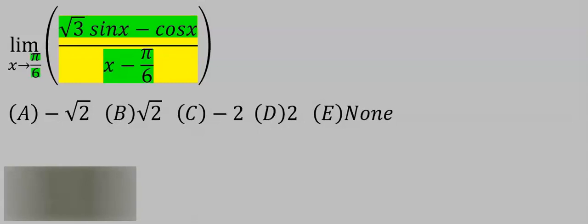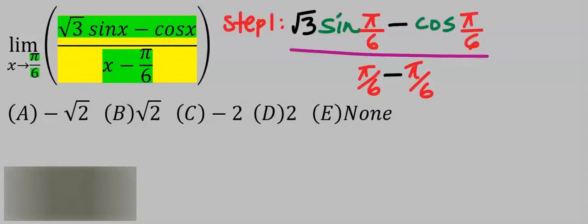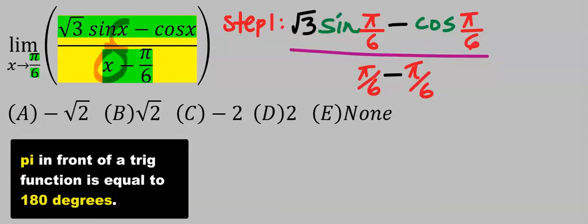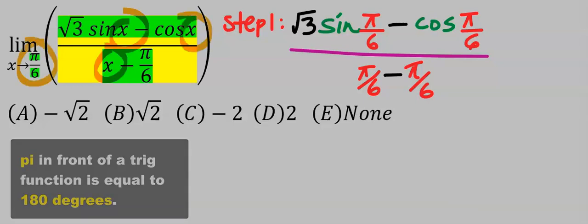Let's consider this question. Step number one: apply direct substitution. That is, whenever I see x, I will input pi over 6.